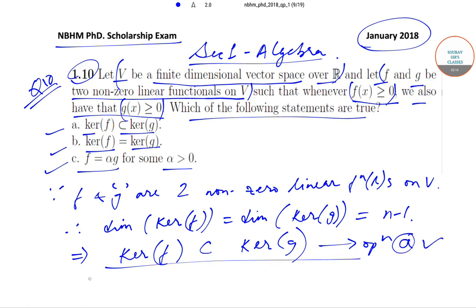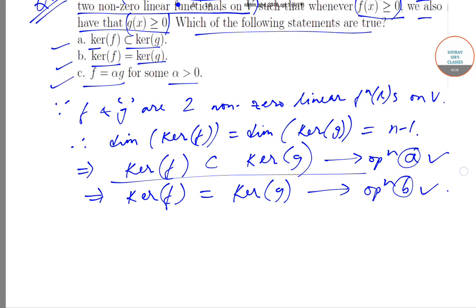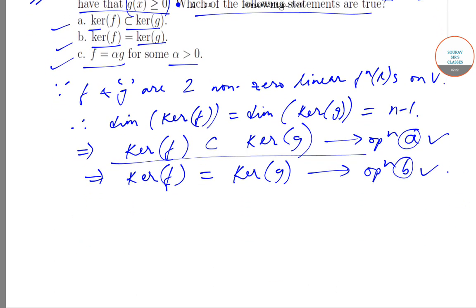Since option A is true — that kernel of F is a proper subset — that implies kernel of F is equal to kernel of G, which is nothing but option B. So option A and option B are both correct.